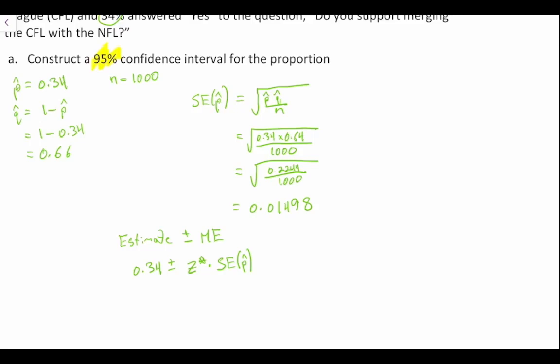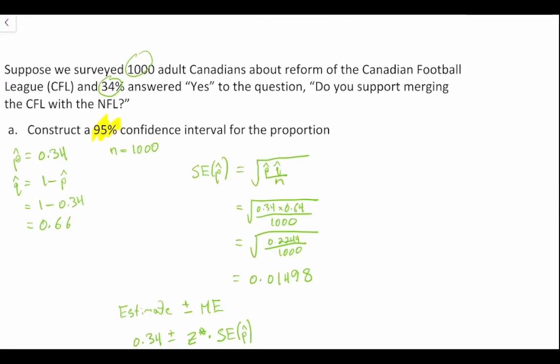Let's just pause for a second and think about, can we use a normal distribution here? So we can check our assumptions and our conditions. We remember doing this in other types of questions. 1,000 Canadians is certainly less than 10% of all Canadians. Our success and failure, so our N times P greater than or equal to 10. Well, yes. N times Q greater than or equal to 10. Yes.